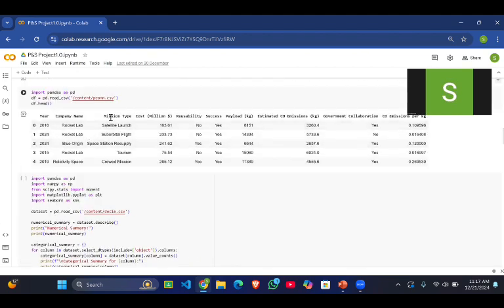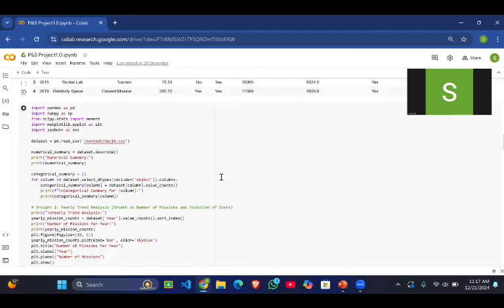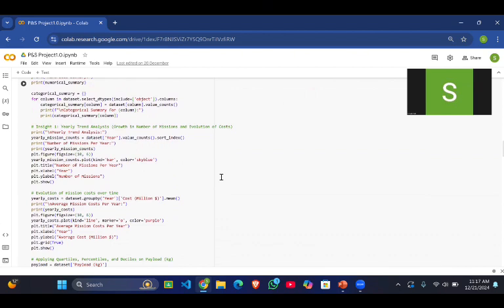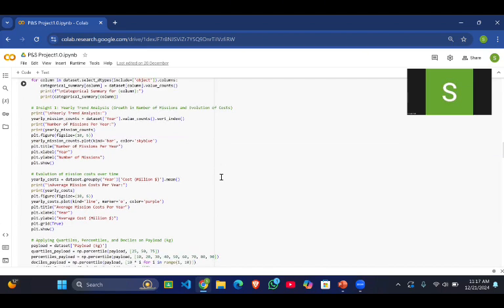This was our CSV file, these columns and the data you can see here. After that, for the trends such as the average carbon emissions per year and the number of missions conducted per each company, we visualized them through bar graphs.